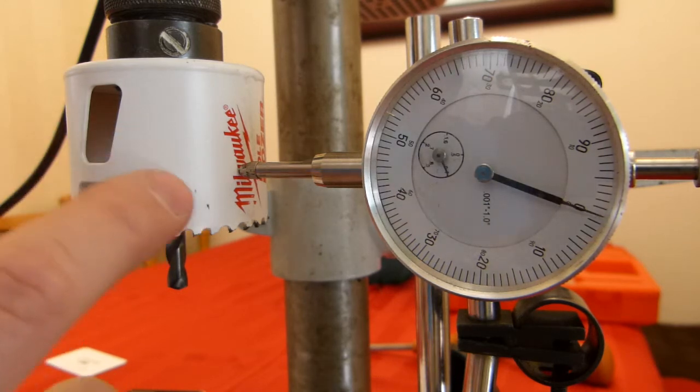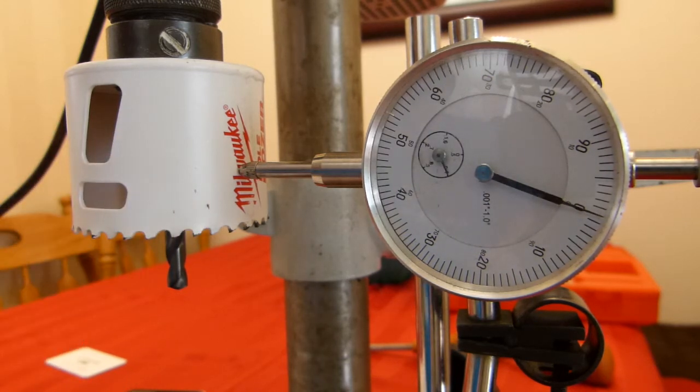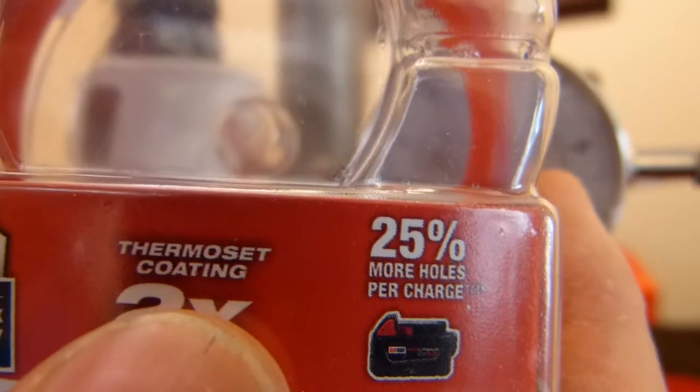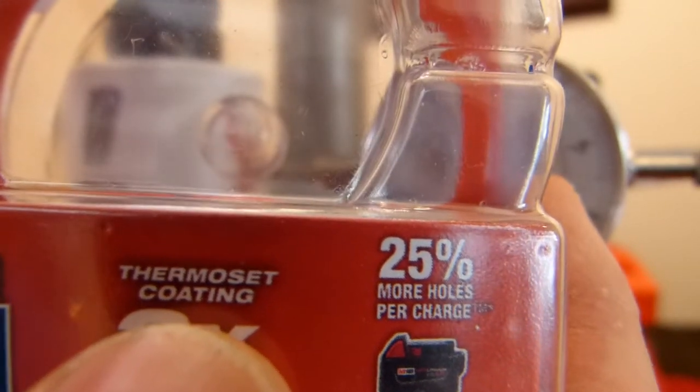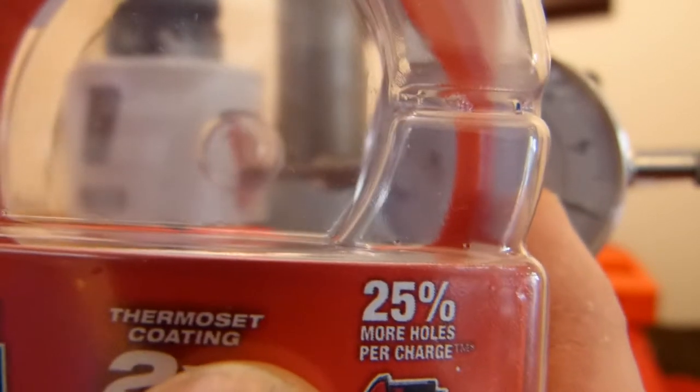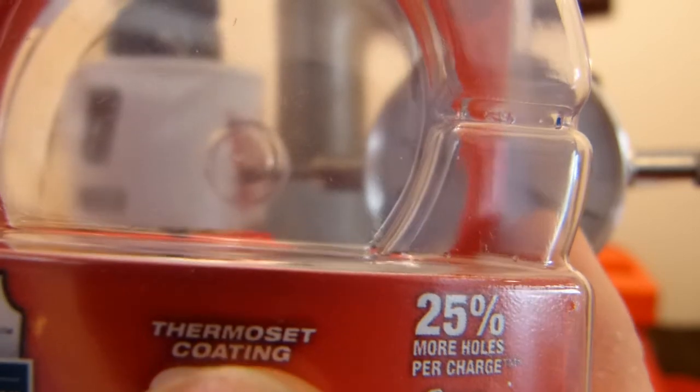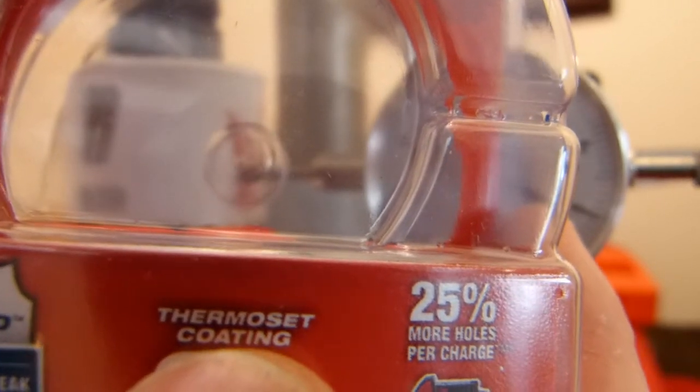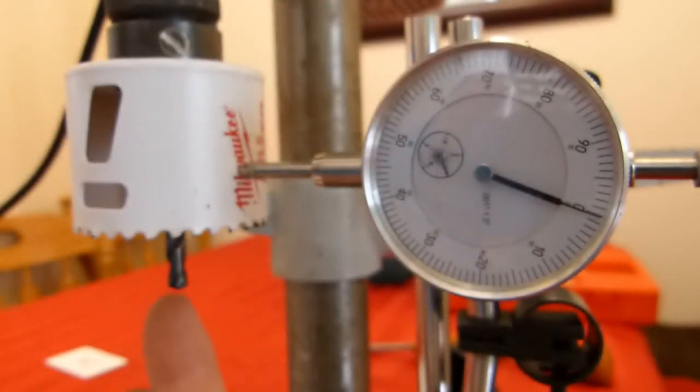They coated it with this white material that's a thermoset coating that you can see on the packaging. The word thermoset means that the coating gets harder when heat is applied to it. Where would the heat come from? Friction while it's making holes.